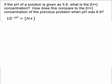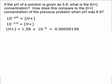We start with that exponential form of our pH formula. 10 to the negative pH equals H plus. We plug in 5.8 for pH. And we get 10 to the negative 5.8 equals H plus.